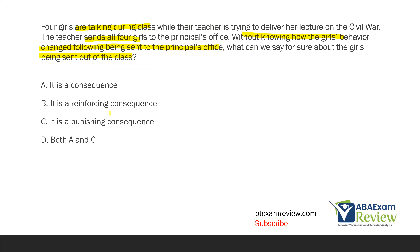Can you be sure it's reinforcing? No — we don't know how the behavior changed. Can you be sure it's punishing? No — we don't know how the behavior changed. If given a scenario where it's specifically asking about the consequence and you don't know future behavior, all we know is it's a consequence. If you get a consequence question and they don't specify what happens in the future but only give you reinforcing and punishment options, then we have to go with the best answer. Here, the best answer is it's a consequence. Without knowing how the girls' behavior changed, all we know is it's a consequence — until we figure out how it affected them in the future, we cannot say for sure it's reinforcing or punishing. The answer is A — it is a consequence.